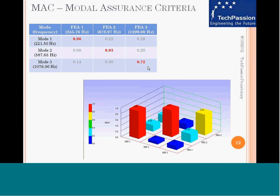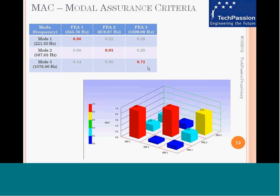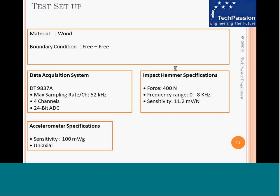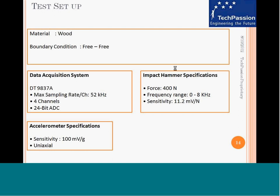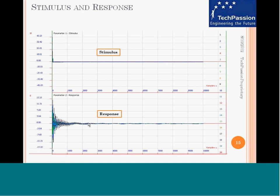The purpose of this approach is to lay out a method which can be used for studying a group of bats and see how properties vary. We then took the second bat, which is of the same material but different dimensions and significantly different weight — 1.2 kilograms. The experimental setup is shown with the bat in free-free boundary condition and an accelerometer mounted at one of the measurement points. The test setup is exactly similar to what was followed for the first bat, and the response signals are slightly different from what we had for the first bat.